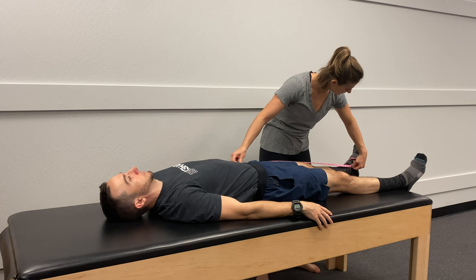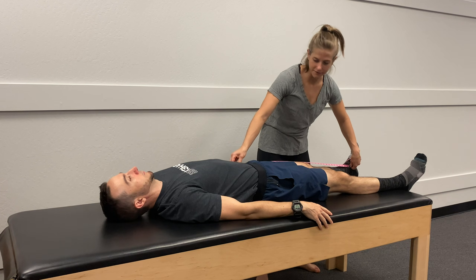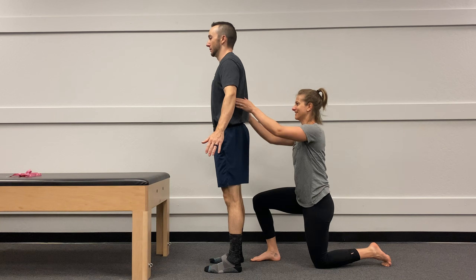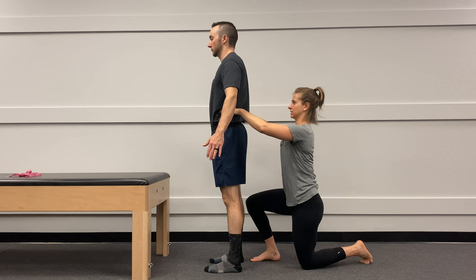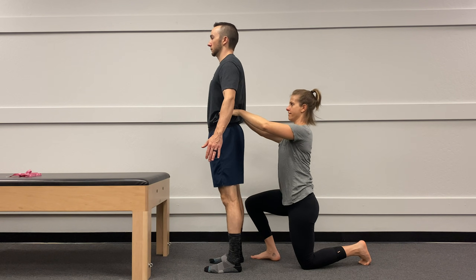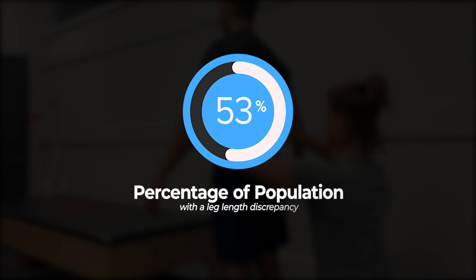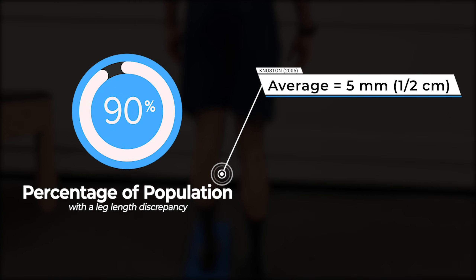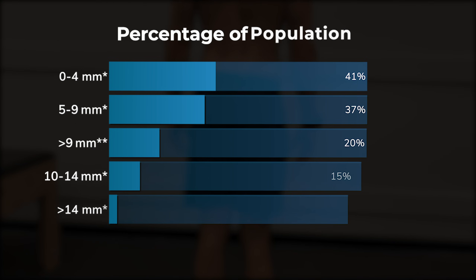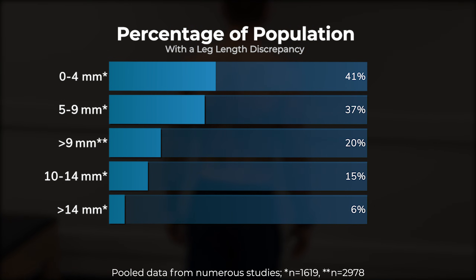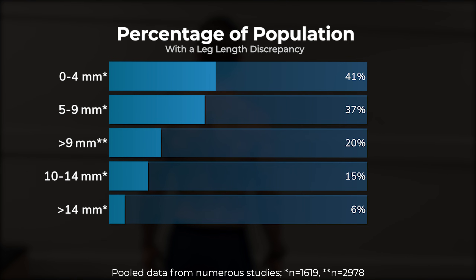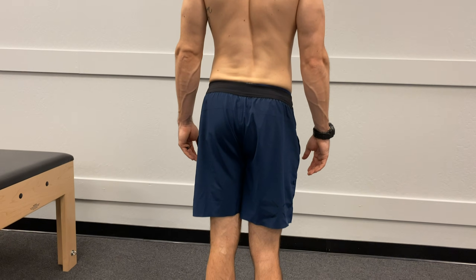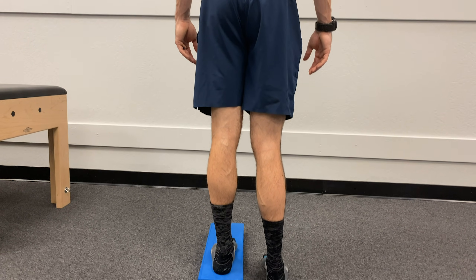Leg length discrepancy is also referred to as leg length inequality, leg length asymmetry, or the less pleasant term, short leg syndrome. It refers to a difference in length between the right and left leg. Leg length asymmetries are actually much more prevalent than you think — about 90% of the population has an anatomical leg length asymmetry, with the average being about 5 millimeters. Differences under 9 millimeters are more prevalent, and differences greater than 10 millimeters become less common. Only about 1 in 1,000 people have a 20 millimeter or 2 centimeter difference — keep that number in mind.